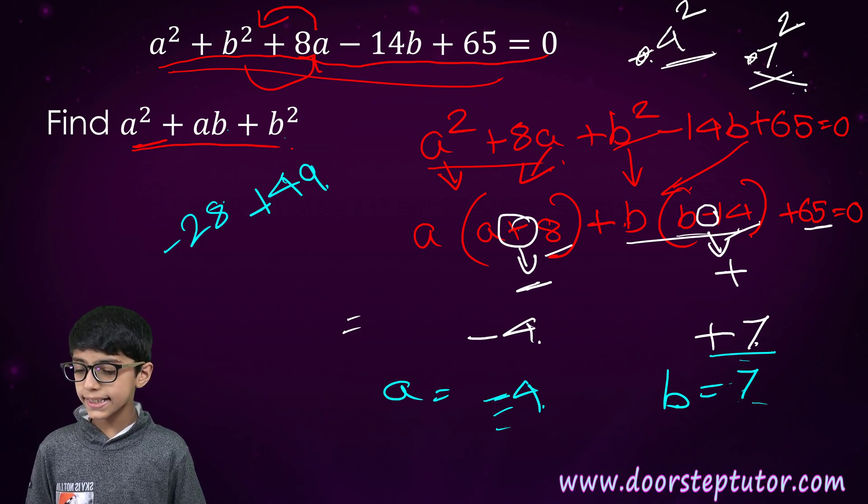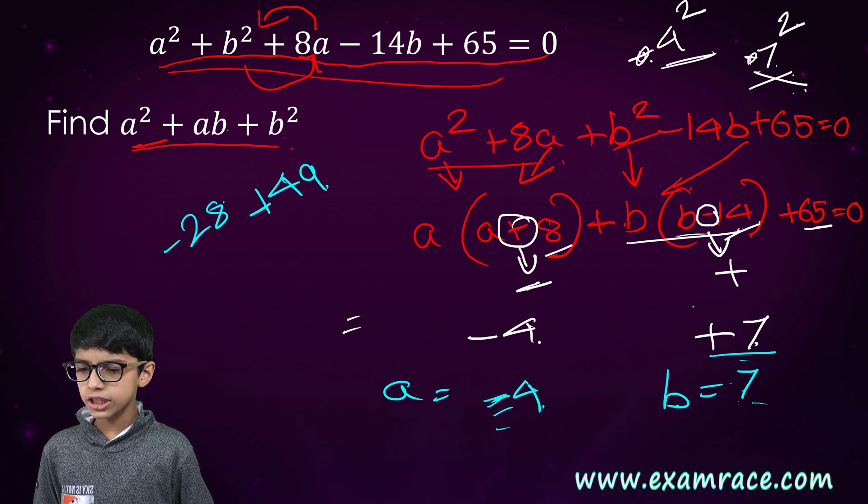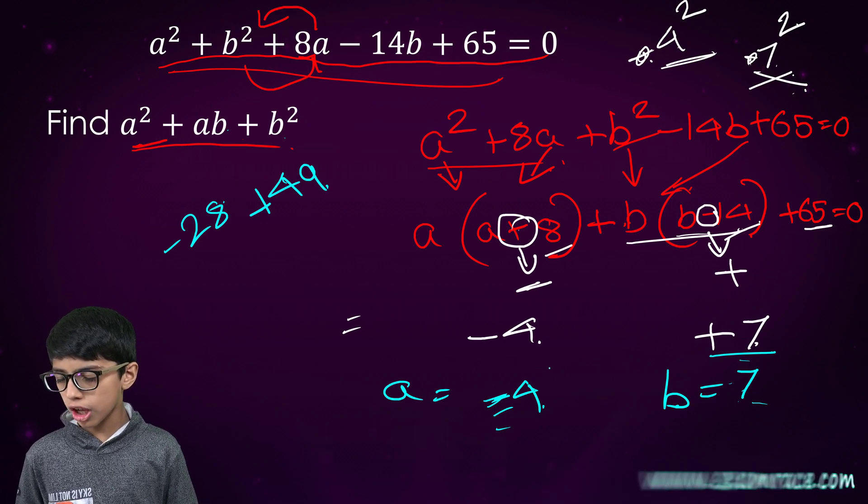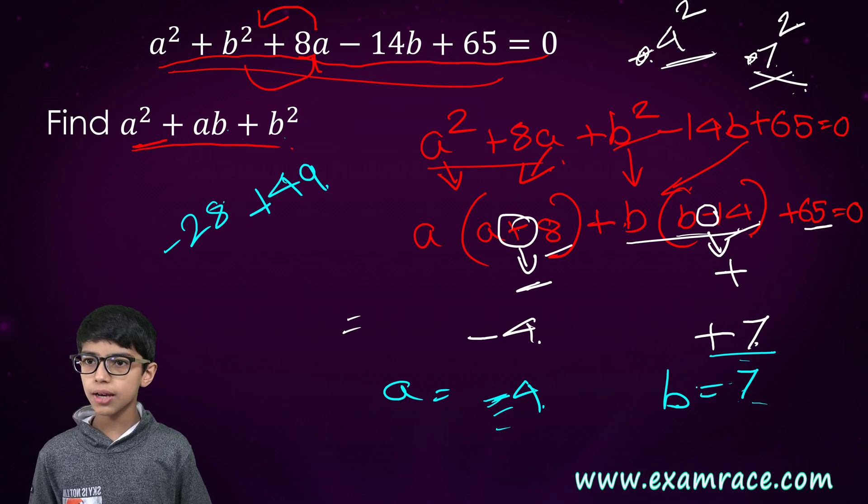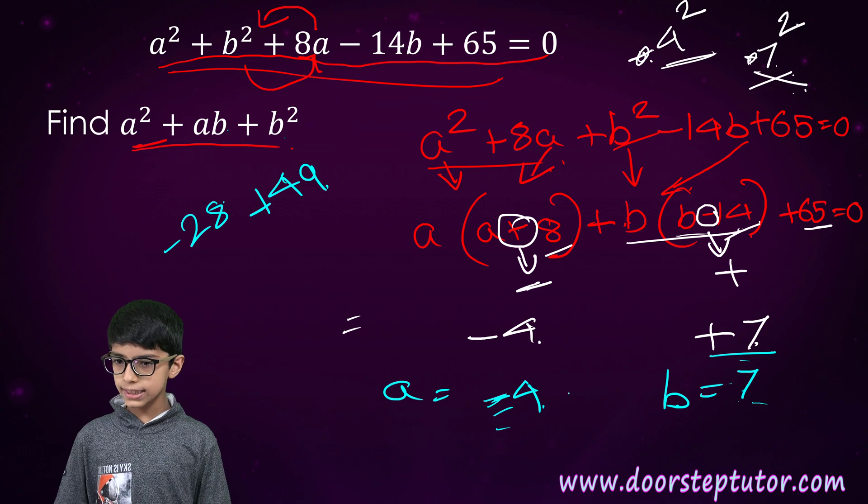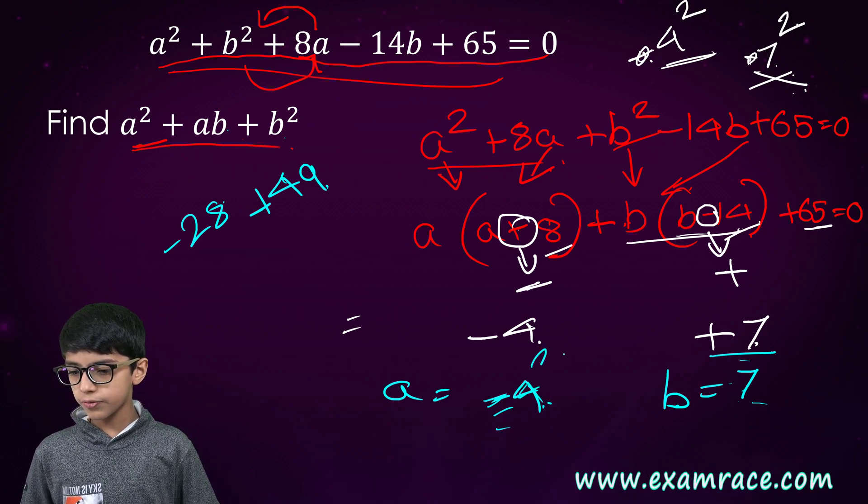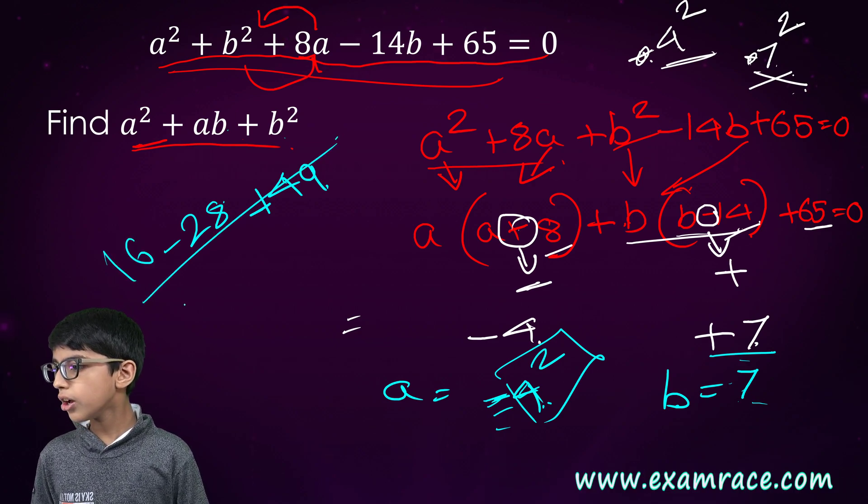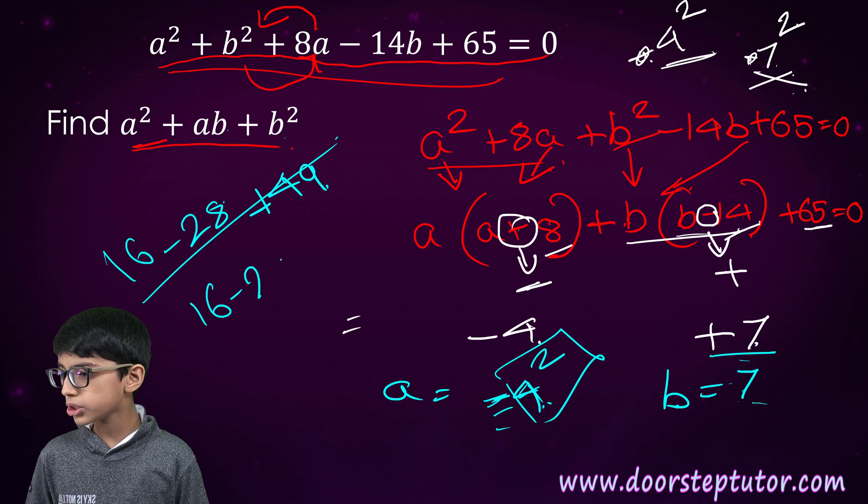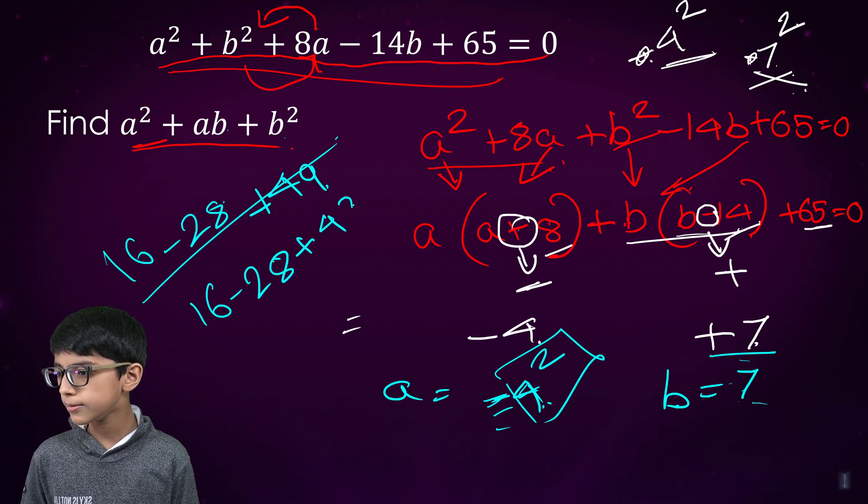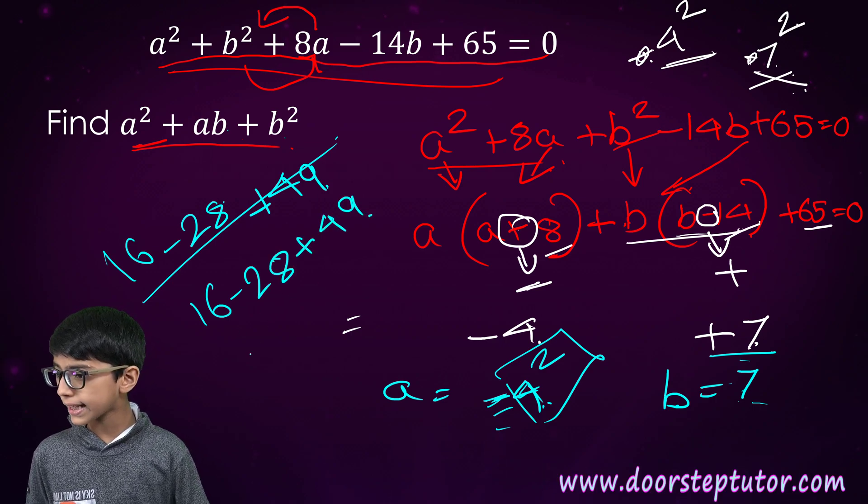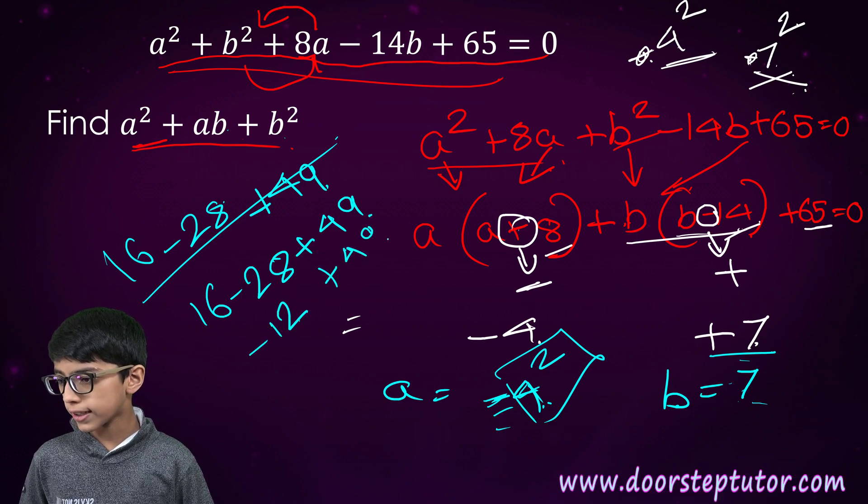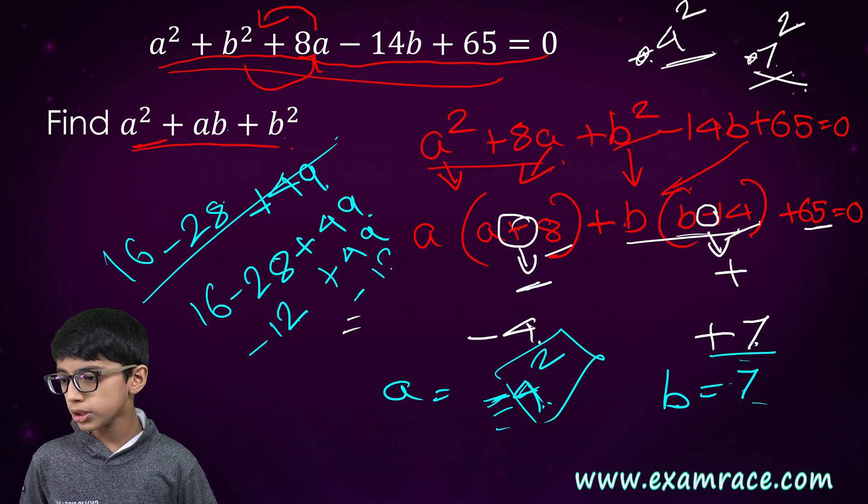4². Sorry, -4². But minus × minus is plus. We already know that; we have discussed about it in our previous classes. So we will take the 4² that is 16. Now 16 - 28 is -12, and -12 + 49 is 49 - 12.